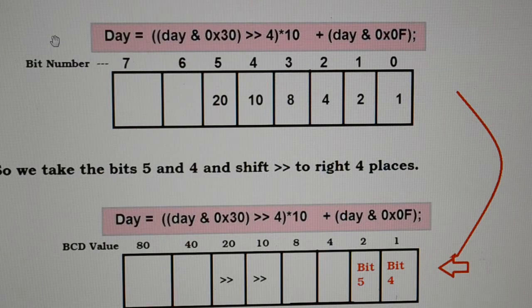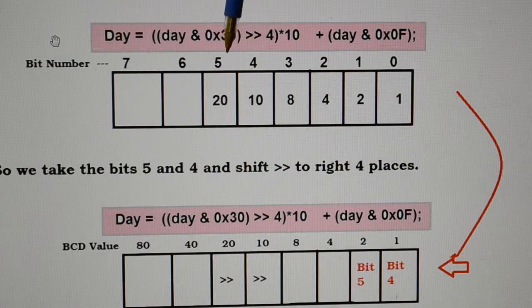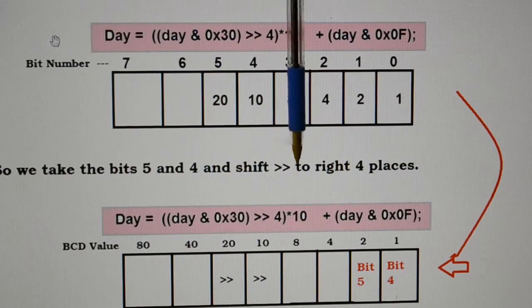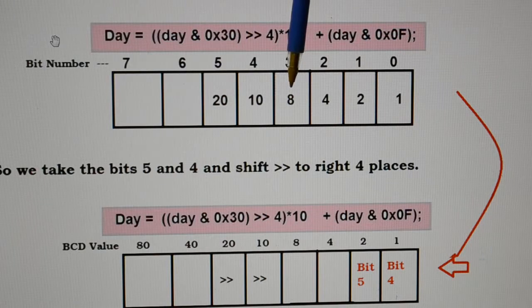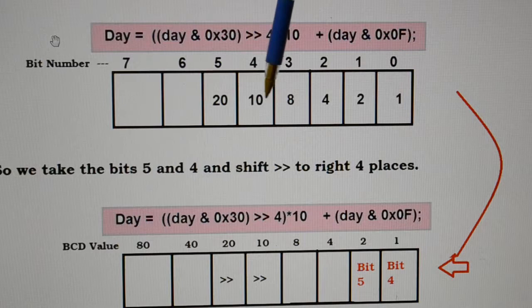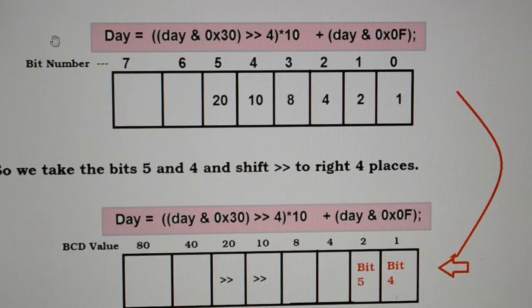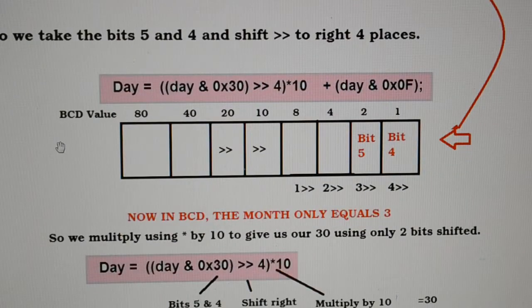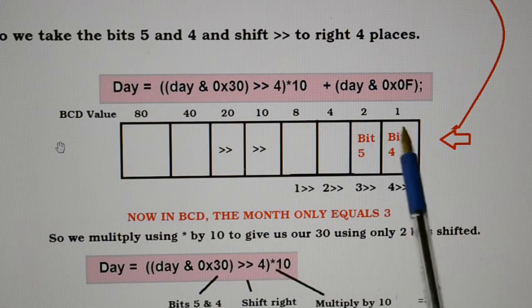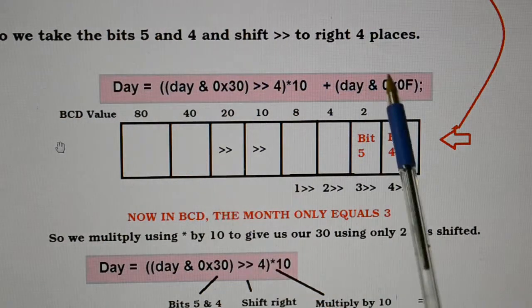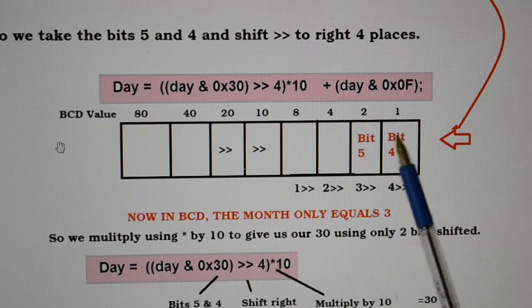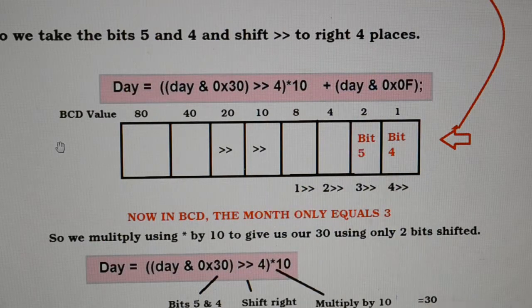So, there's the bit numbers. So, we're dealing with 5 and 4. So, we take bits 5 and 4 and shift them right 4 places. So, these two. So, 1, 2, 3, 4. So, this 10 and 20 become 1 and 2. So, we had 30, but now we've only got 3. If you look at the BCD values again. 1, 2, 4, 8, 10, 20, 40, 80. We've only got 1 and a 2. That's up to 3. Because we've just shifted it right 4 places.